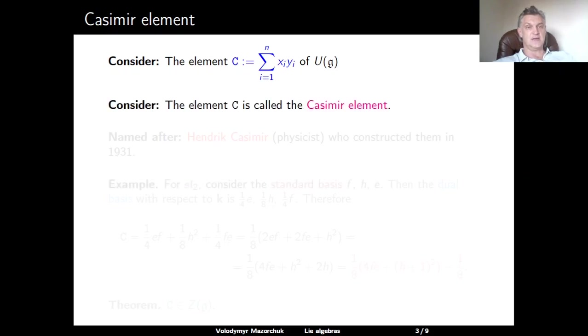This element C is called the Casimir element in honor of Hendrik Casimir, who constructed such elements back in 1931.